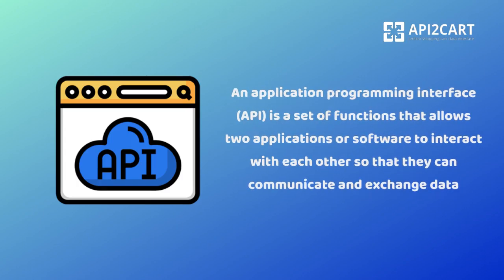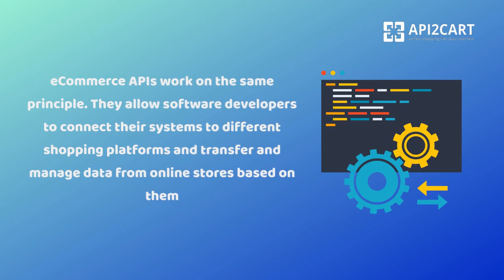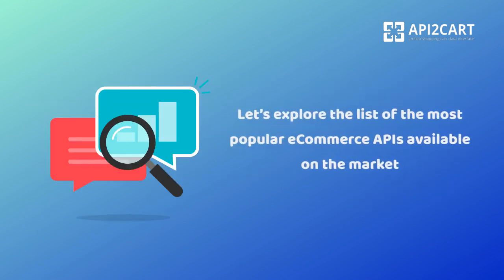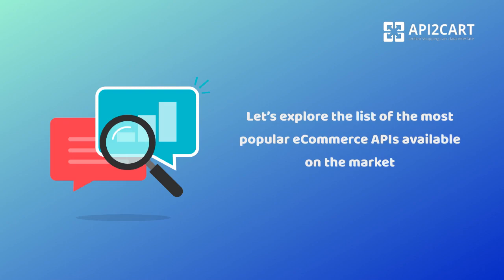An application programming interface is a set of functions that allows two applications or software to interact with each other so that they can communicate and exchange data. Ecommerce APIs work on the same principle. They allow software developers to connect their systems to different shopping platforms and transfer and manage data from online stores based on them. Let's explore the list of the most popular ecommerce APIs available on the market.